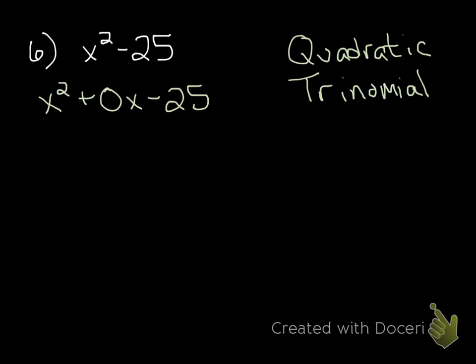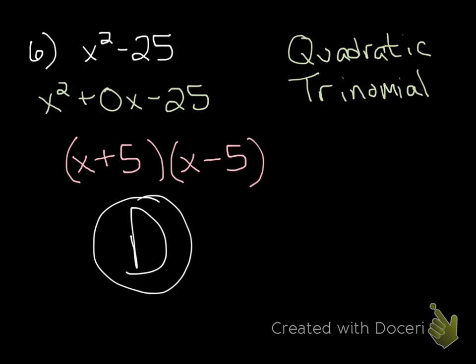In this case, the a value is 1, so we would just use simple quadratic factoring. If we're going to multiply to negative 25 but add to 0, we need one number to be positive and the other to be negative. The two numbers that would make that happen are positive 5 and negative 5, and that matches with letter D.